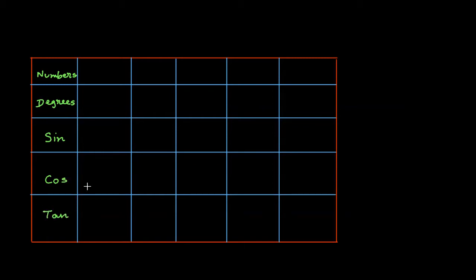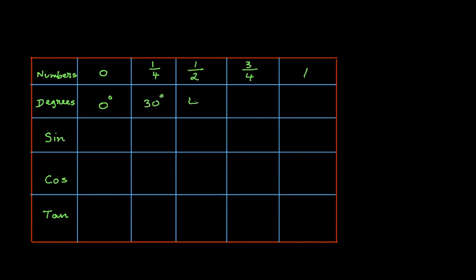This is exactly how you should name them. For the numbers, we are going to start with 0, 1/4, 1/2, 3/4, and 1. You can see that this gradually increases by 1/4, going from 0 to 1/4, then to 1/2, then 3/4, and then 1. For the degrees, you are going to start with 0 degrees, 30 degrees, 45 degrees, 60 degrees, and 90 degrees.